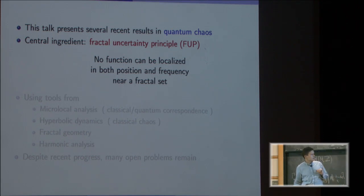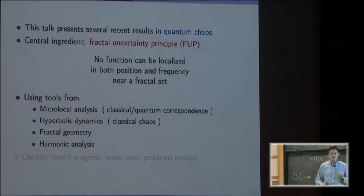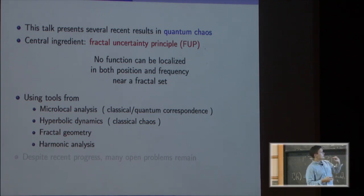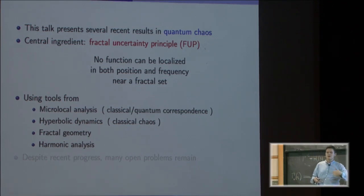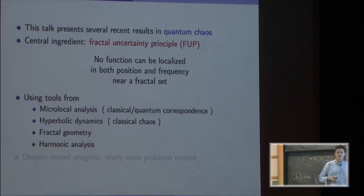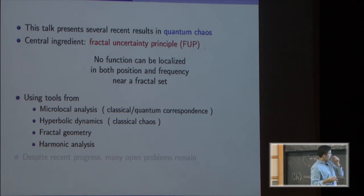The proofs of the results use tools from several different fields. One is microlocal analysis, which is the mathematical theory behind the classical-to-quantum correspondence or geometric wave approximation. It also uses tools from hyperbolic dynamics. Quantum chaos can be obtained when you combine the two: hyperbolic dynamics gives the chaotic behavior of the classical system, and microlocal analysis translates what the chaotic behavior of the classical system implies for the corresponding quantum system. The fractal uncertainty principle itself requires tools from two additional fields: fractal geometry and harmonic analysis. So these four fields are combined to give these results.